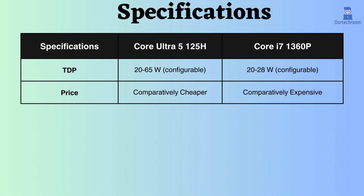The TDP of the Core i7-1360P is lower than that of the Core Ultra 125H, so the Core i7 consumes less power. Also, the Core Ultra 125H is comparatively cheaper than the Core i7-1360P.